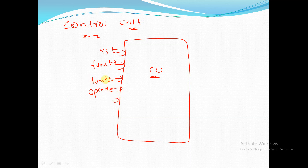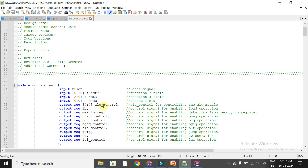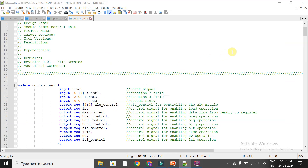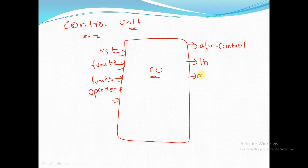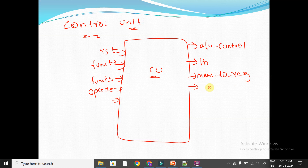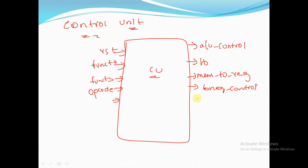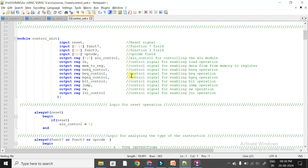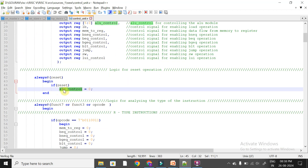While instantiating, I am dividing the instruction and providing the fields funct7, funct3, and opcode. The outputs of the control unit include: ALU control (6-bit), lb (load byte), mem_to_reg, bneq_control, and other branch/jump signals. When reset is asserted, ALU control is set to zero.